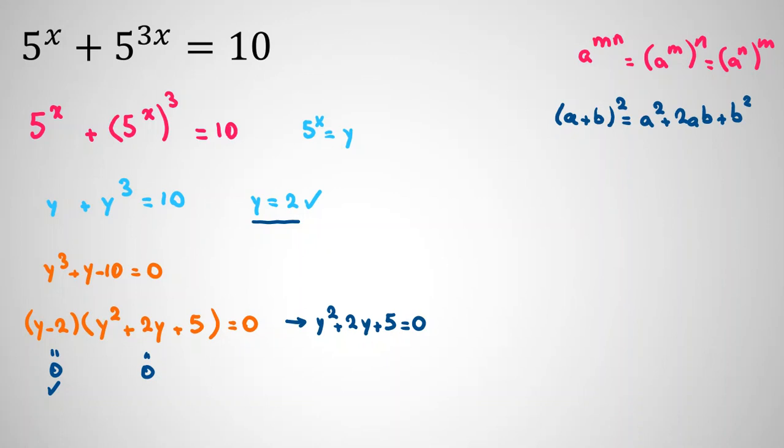Now, I want to apply it. If I apply that here, I can say it is y squared plus 2y. Instead of 5, I write 1 plus 4 equals 0.